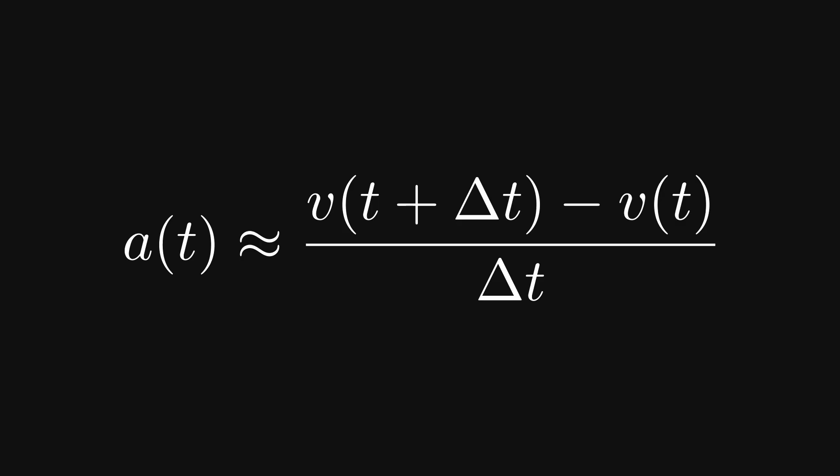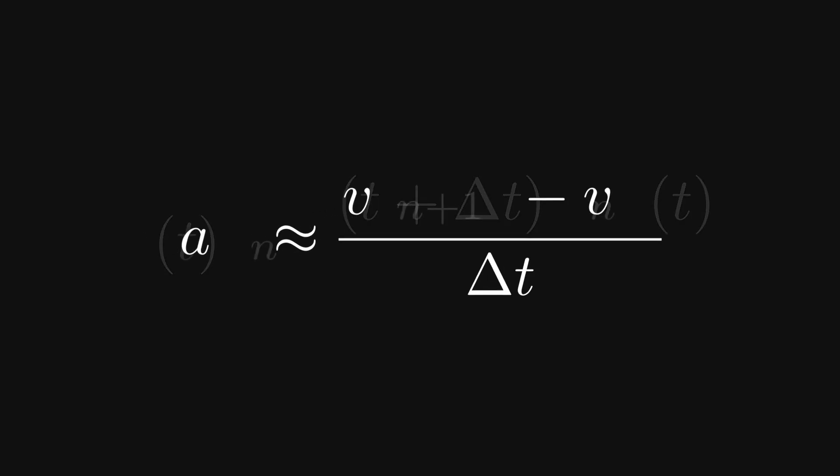Delta t is also going to be constant, so we can improve the notation by replacing t with subscript n, and t plus dt with subscript n plus 1. You can think of n as the current state, and n plus 1, therefore, as the next.